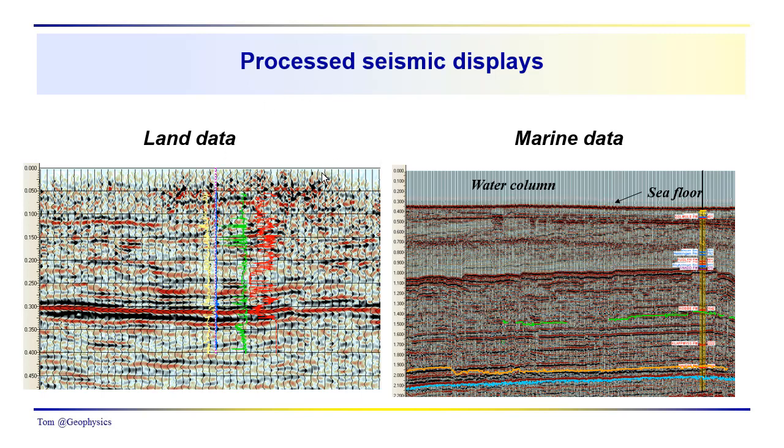If you've interpreted seismic data, you've probably been looking at sections that look something like this, where you have what we call wiggly traces. They wiggle, or go back and forth, and they're often referred to as variable area wiggly trace, because the positive cycles are often colored in black, and the negative cycles are left uncolored.